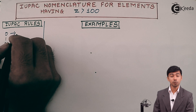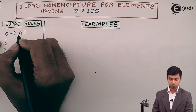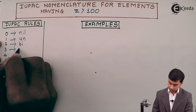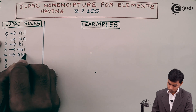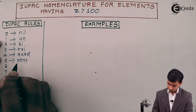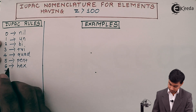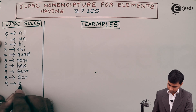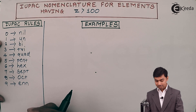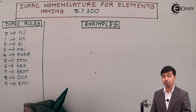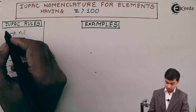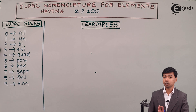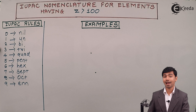According to IUPAC rules: 0 is called 'nil', 1 is 'un', 2 is 'bi', 3 is 'tri', 4 is 'quad', 5 is 'pent', 6 is 'hex', 7 is 'sept', 8 is 'oct', and 9 is 'enn'. These are the abbreviations given by IUPAC for the nomenclature of man-made elements.